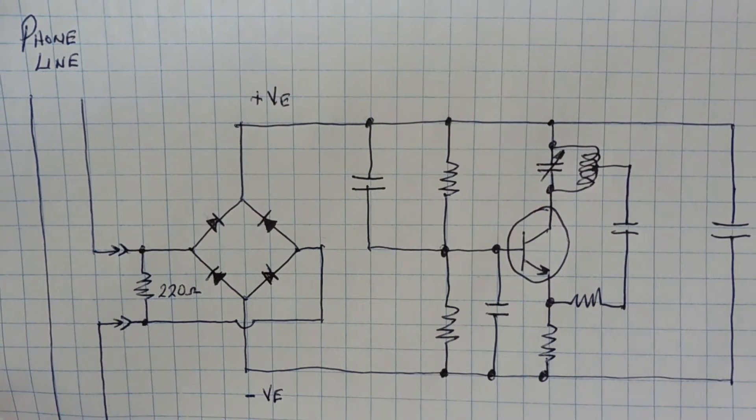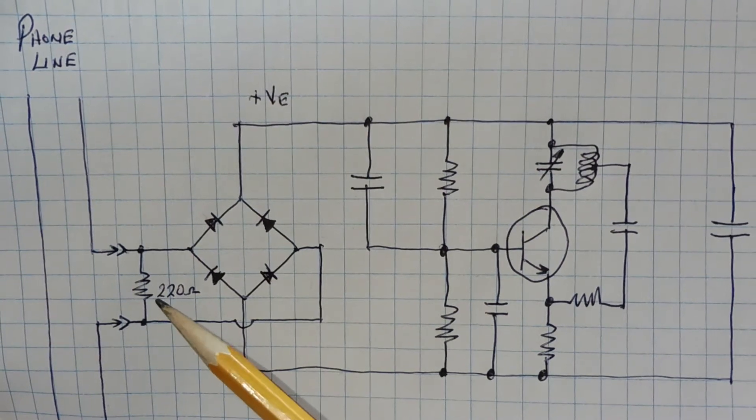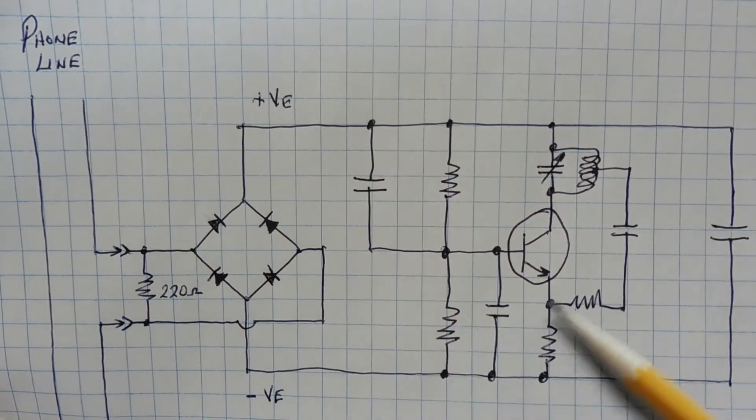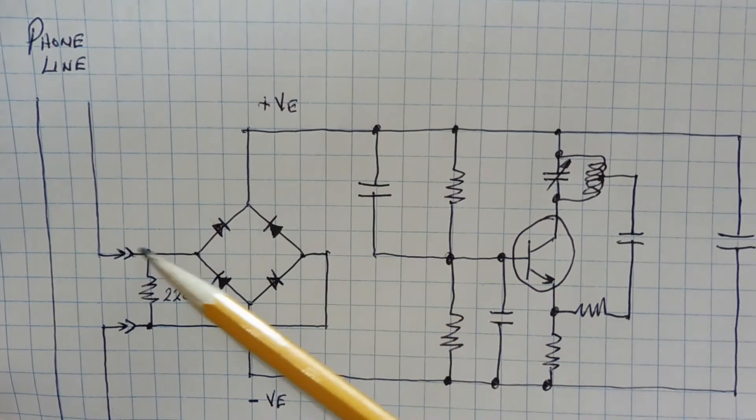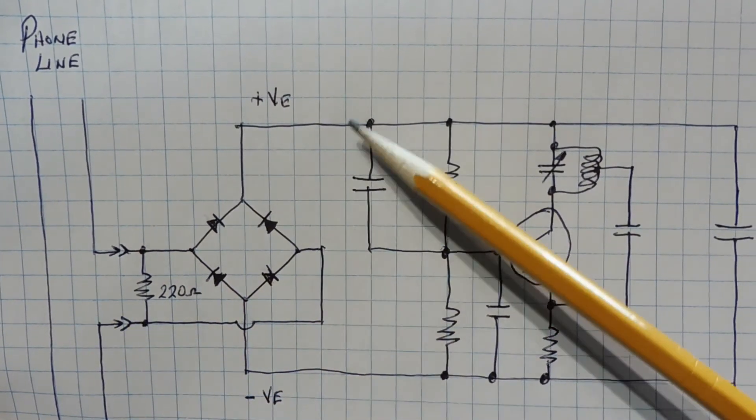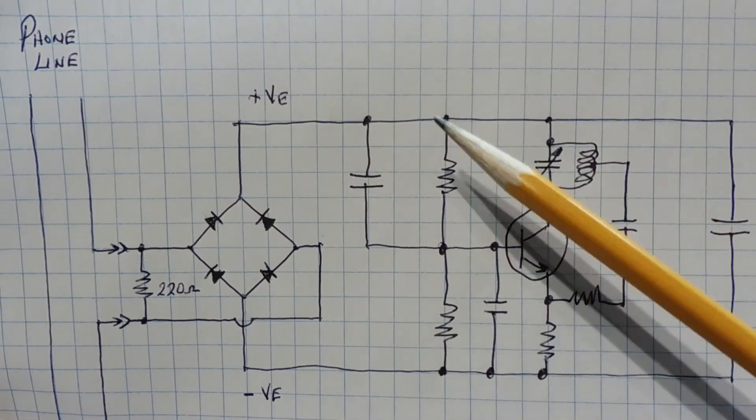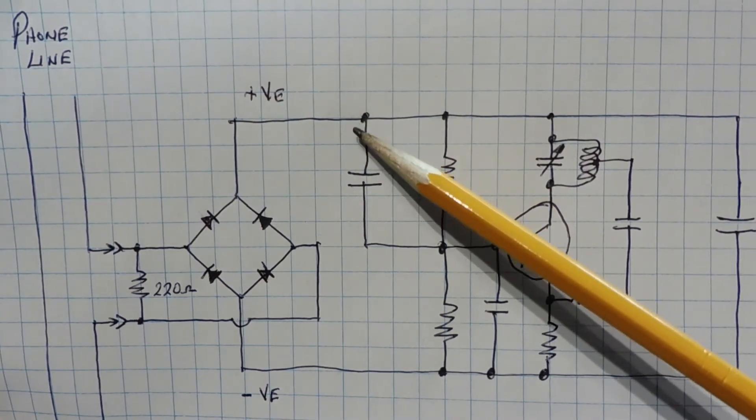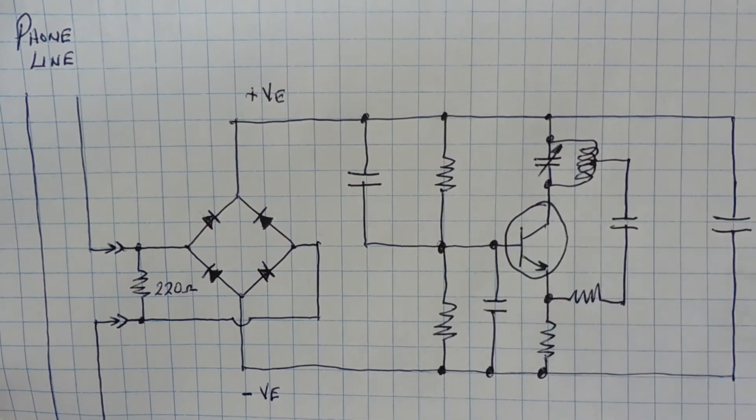When the phone goes off hook and we get current flowing through this loop, we'll get current flowing through the 220 ohm resistor and we'll get a voltage drop across the resistor. That voltage drop is what's going to power this circuitry. This bridge rectifier ensures the polarity will always be correct no matter how we connect the two terminals into the phone line. So we'll have plus on the top bus and minus on the bottom and that will power this whole circuitry. On this DC voltage, we're going to have an AC component. That's going to be the voice or the audio. That's going to be fed through this capacitor into the base of this transistor which will modulate the oscillator.